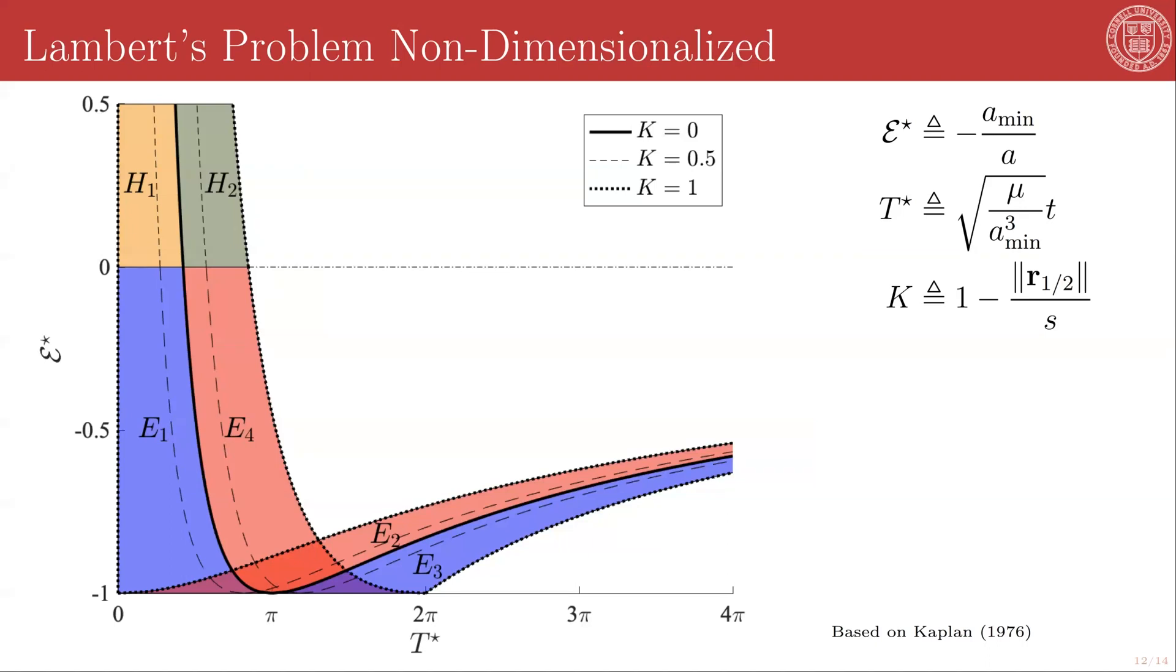That all sounds good in theory, but how do we actually put this into practice? There are a lot of different methods of implementing this, but one of the most ubiquitous ones is based on the universal variable formulation of the two-body problem.